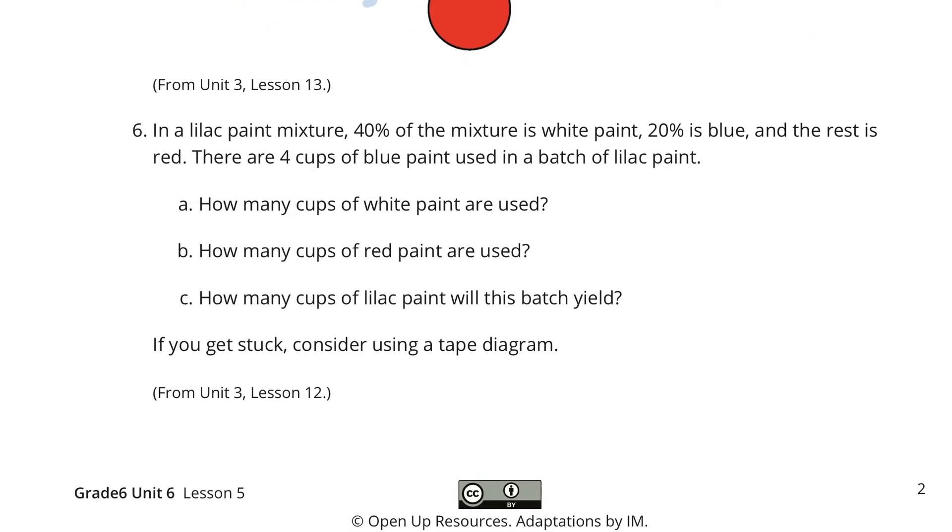Now, in question 5, in a lilac plant mixture, 40% of the mixture is white paint, 20% is blue, and the rest is red. There are four cups of blue paint used in a batch of lilac paint. How many cups of white are used? How many cups of red are used? How many cups of lilac paint will this batch yield? If you get stuck, consider using a tape diagram.